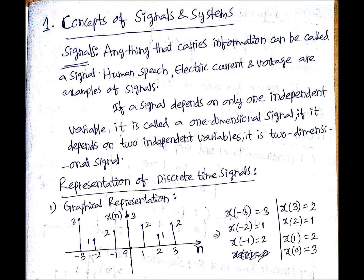The first one is graphical representation. Suppose you have given a representation like this: x(n) with respect to n. n is the time steps.